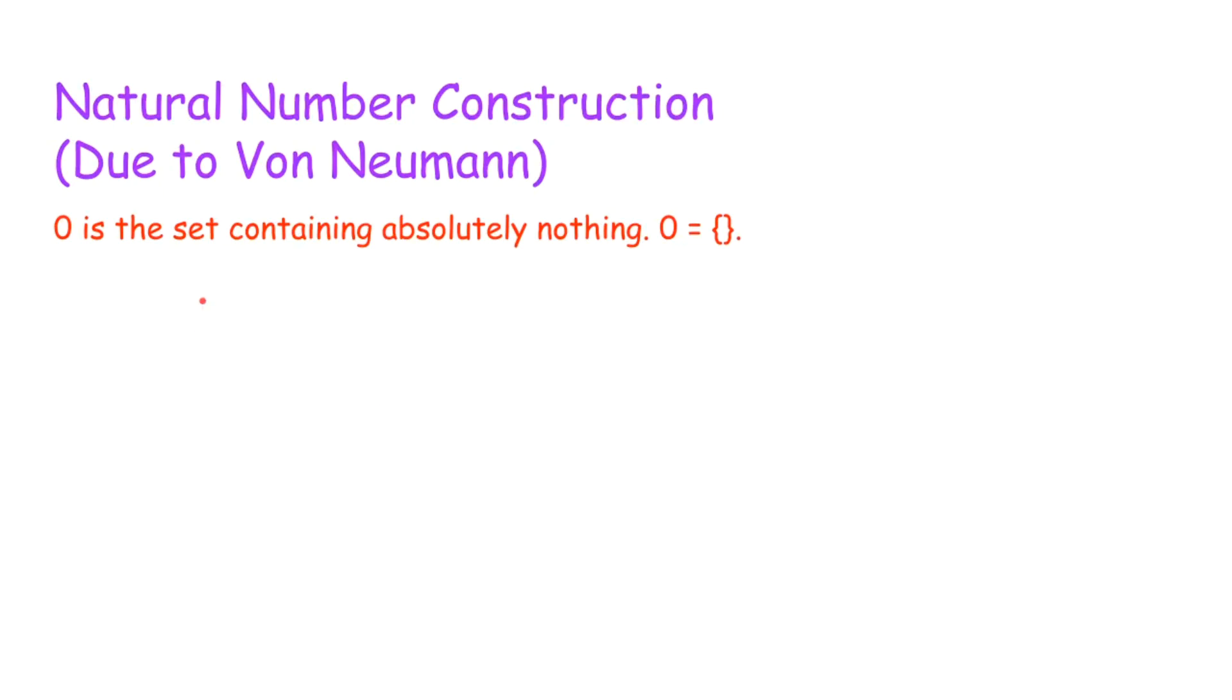So von Neumann from this made natural number construction, which we use to these days to represent natural numbers as sets. So zero is just the empty set, it's the set containing nothing. One is the set containing the empty set. So it's the set containing zero. One is the set containing zero.